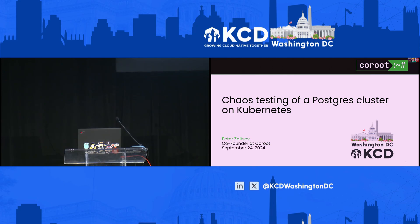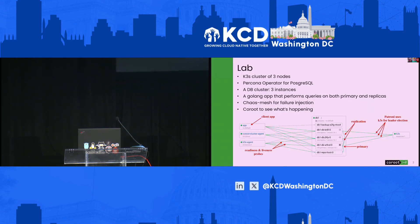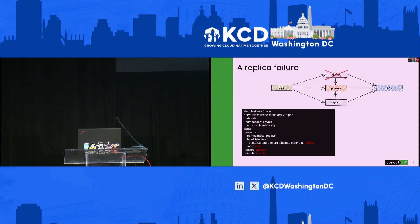This is a very interesting topic because databases are rather complicated and reliability is very important for them, so playing with different kinds of failures and understanding what really happens is quite valuable. We'll use a pretty simple lab: a K3S cluster with a Patroni operator running a highly available Postgres with three nodes, and a simple Go application that runs some queries. We'll start by injecting a simple failure — we will kill one of the replicas and see what happens.